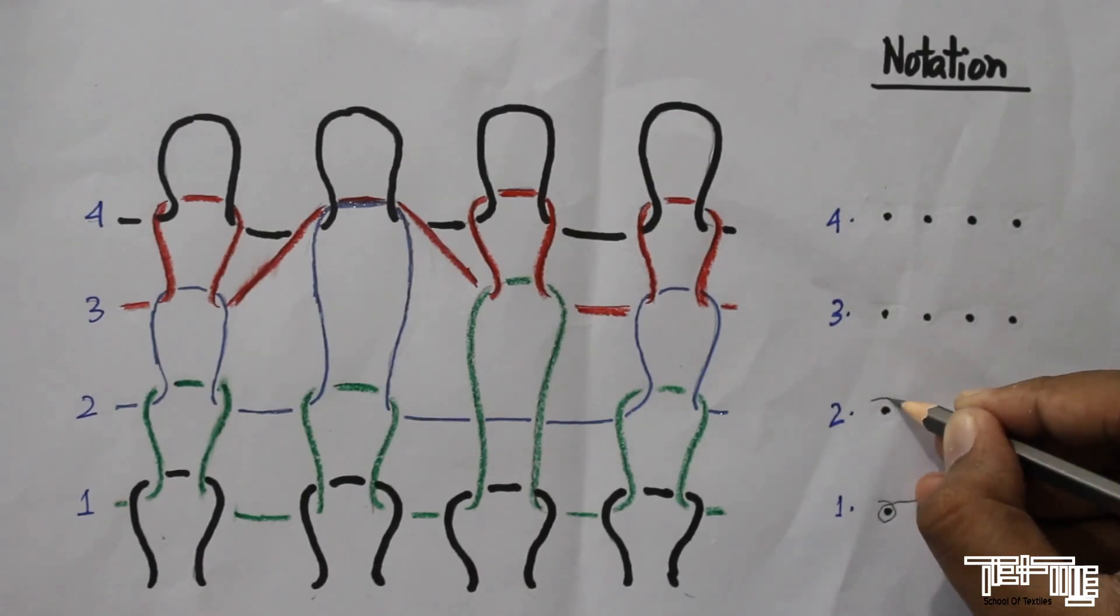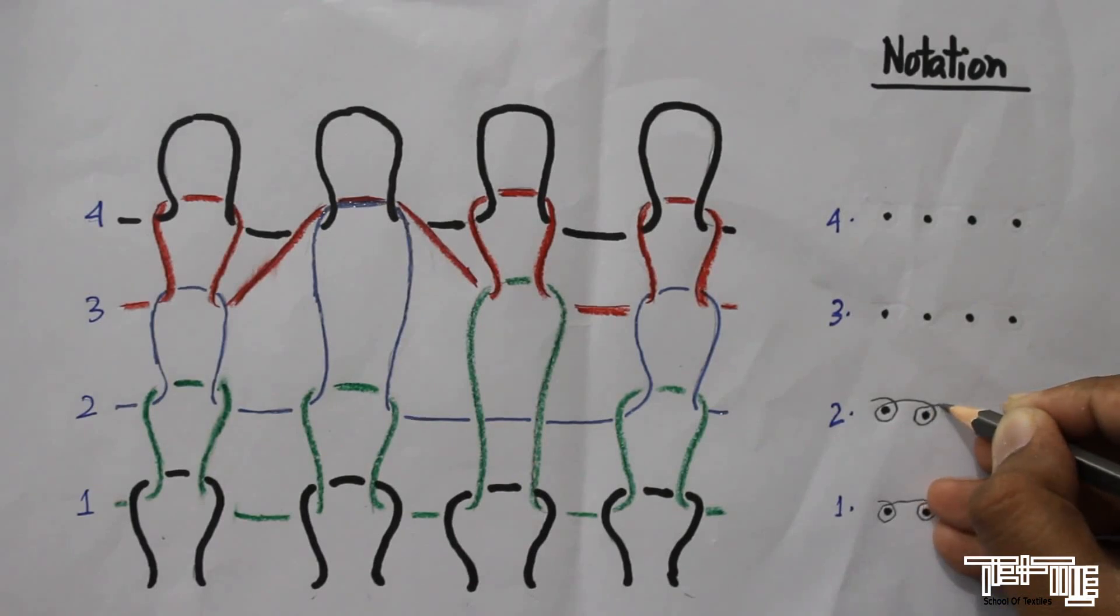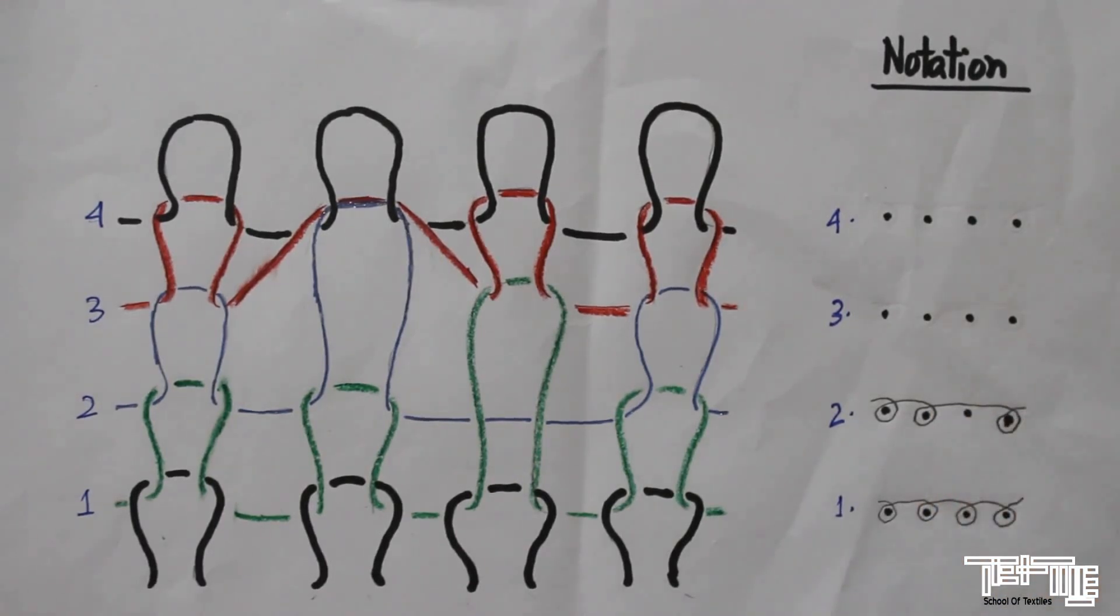In second course there is a miss in third position. So it will be knit, knit, miss, and knit.